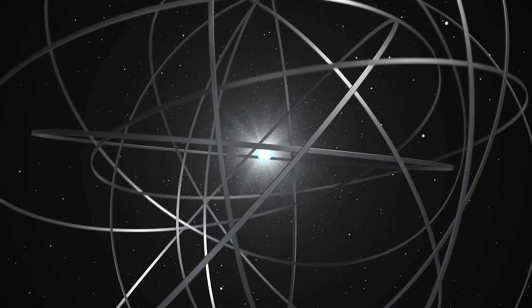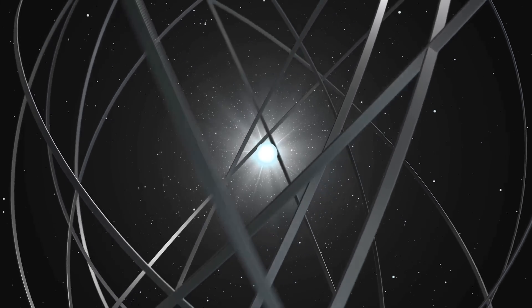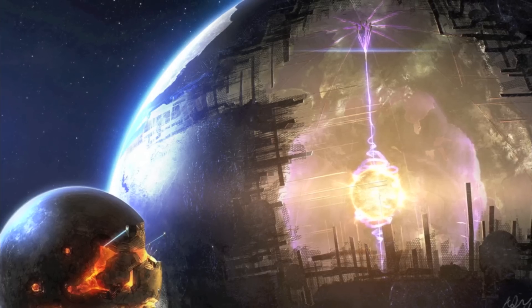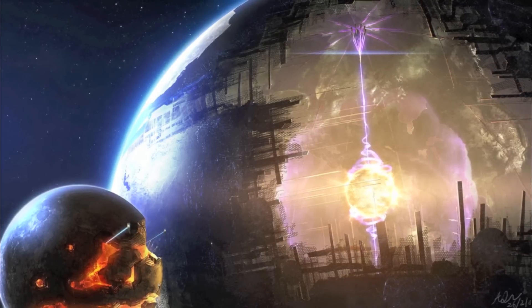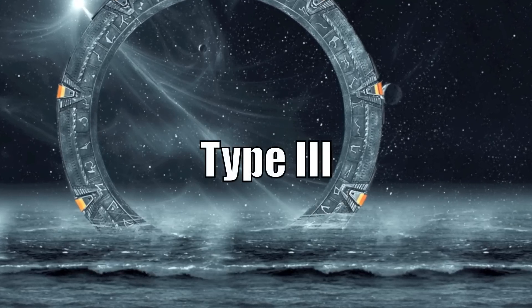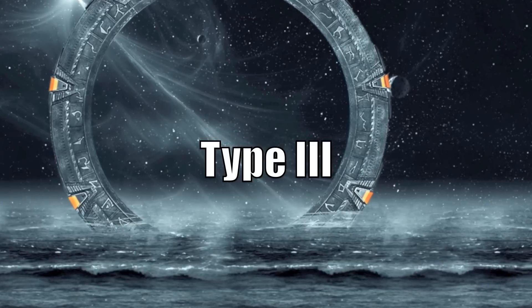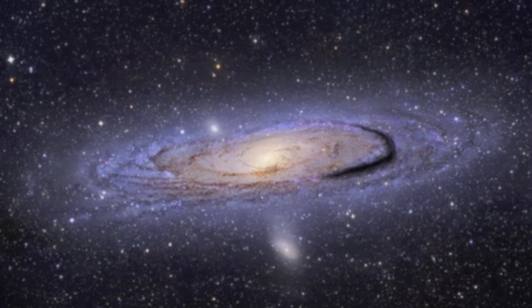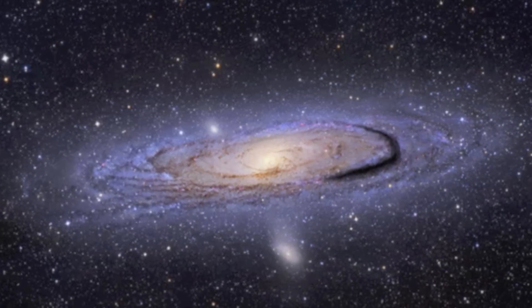It would control the orbit of all planets in that system, harvest asteroids and comets at its leisure, and basically consume the entire solar system, an intimidating power to behold. Type 3: A galactic civilization capable of inhabiting and harnessing the energy of an entire galaxy. A Type 3 civilization would spend the entire galaxy colonizing and controlling numerous systems.